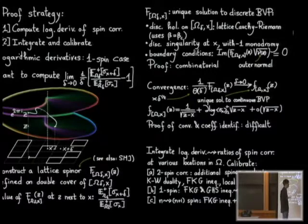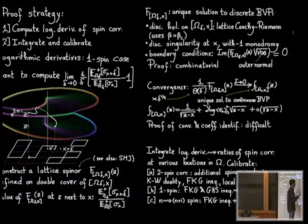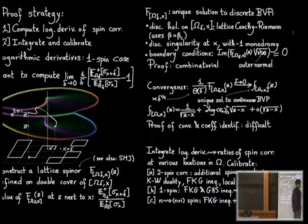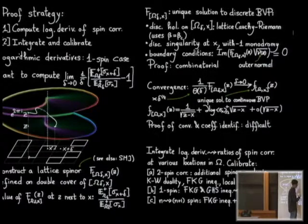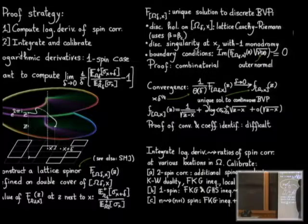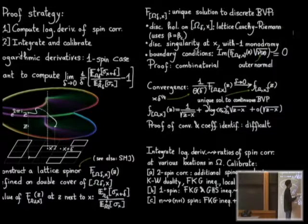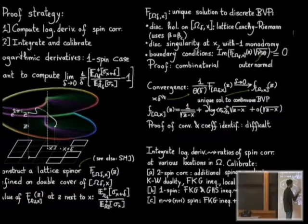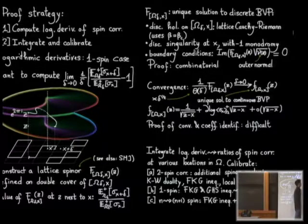If you're interested in limits, you still have to do analysis. Once properly rescaled by a factor of order square root of the mesh size, this function as a function of z converges to a continuous function. This continuous function is the unique solution to the continuous analog of the discrete boundary value problem: continuous discrete holomorphicity becomes holomorphicity, the discrete singularity becomes a regular square root singularity, and the boundary conditions become analogous continuous boundary conditions — a Riemann-Hilbert type boundary condition.